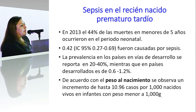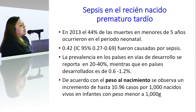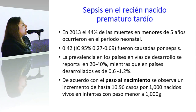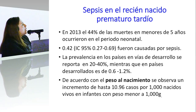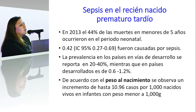Hablando de los prematuros específicamente, lo que más se ha relacionado al riesgo de sepsis es el peso al nacimiento, no tanto la edad gestacional, sino el peso al nacimiento, viendo un incremento de casos de hasta 10.9 por cada mil nacidos vivos con un peso menor de mil gramos.